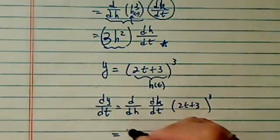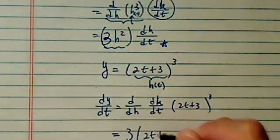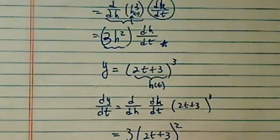This one would actually equal to 3 times (2t+3)². That's the 3h² part.